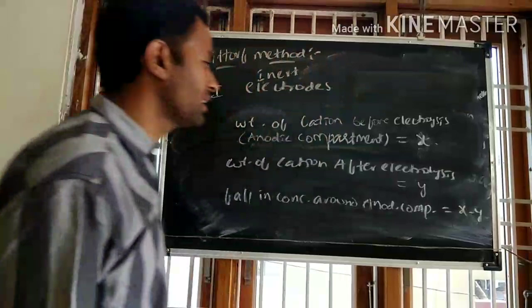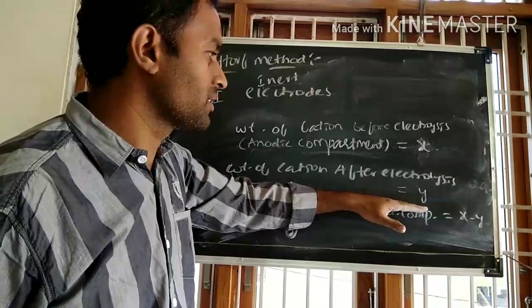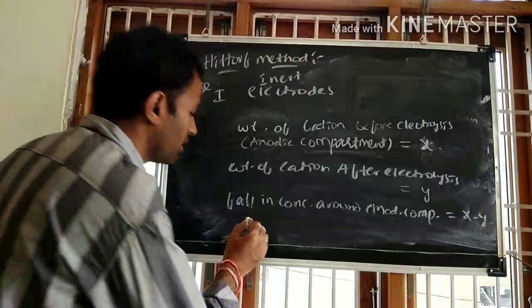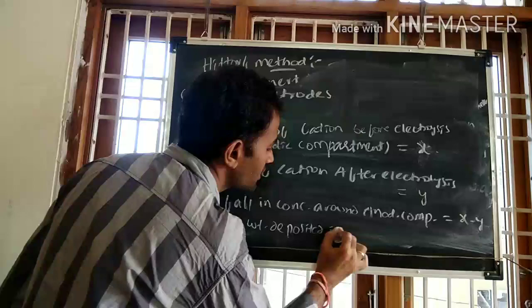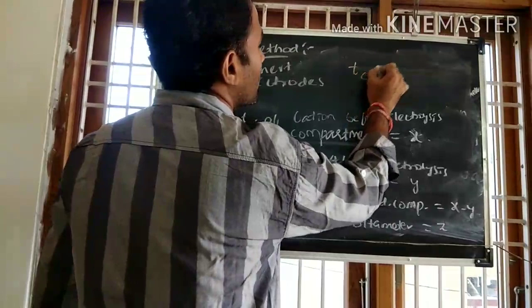Before electrolysis, the number of cations in the anodic compartment is higher compared to after electrolysis. So the fall in concentration around the anodic compartment is x minus y. The weight deposited in the silver voltmeter is let z. Therefore, the transport number of the cation equals (x minus y) divided by z.